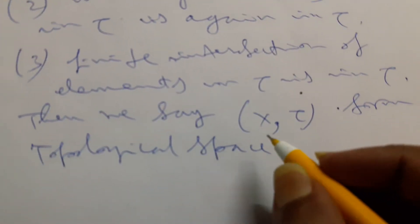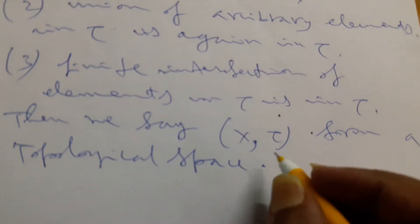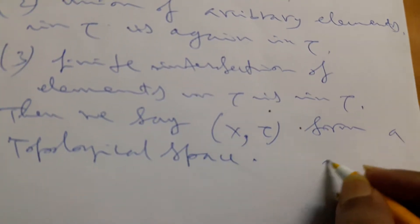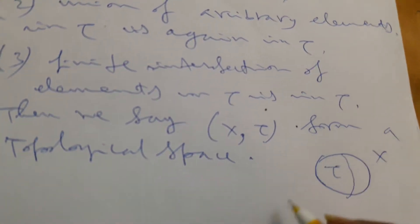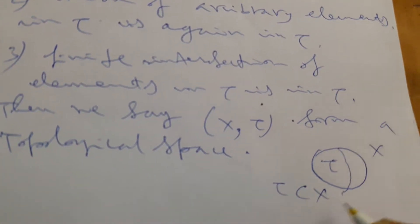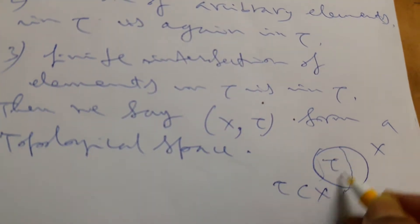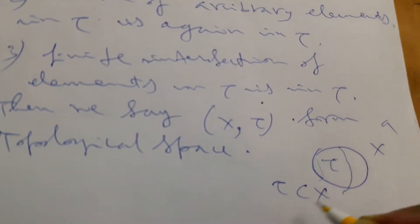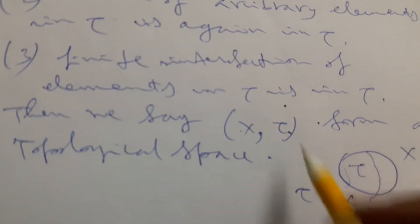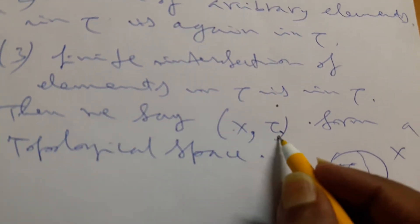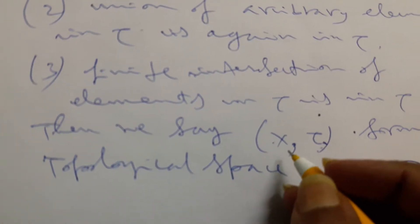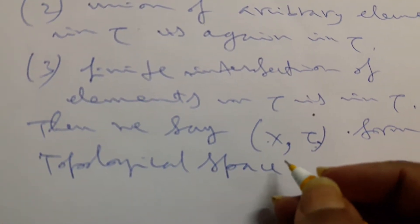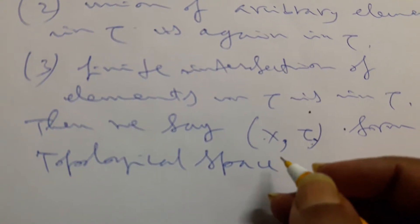In this case of topology, we need a set X and collections of its subsets. Tau is a collection of subsets of X, and all elements in tau together make up tau. So X and tau in this compact form make a topological space. For example, metric spaces are also topological spaces. And for topology, if we consider any real line, that is also a topology.